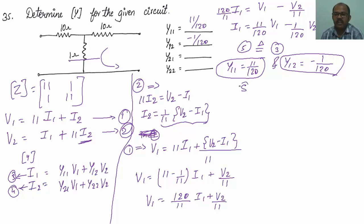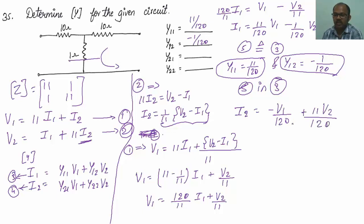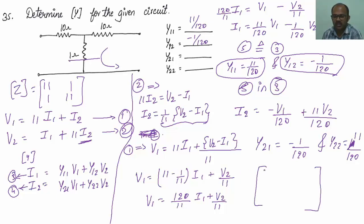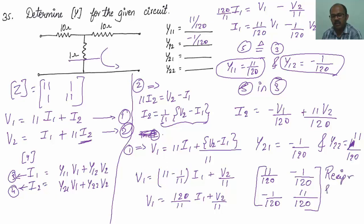Substituting into equation 4: I2 equals minus(1/120)·V1 plus (11/120)·V2. So Y21 equals minus 1/120 and Y22 equals 11/120. This matrix is both reciprocal and symmetric, so it follows both reciprocity and symmetry conditions.